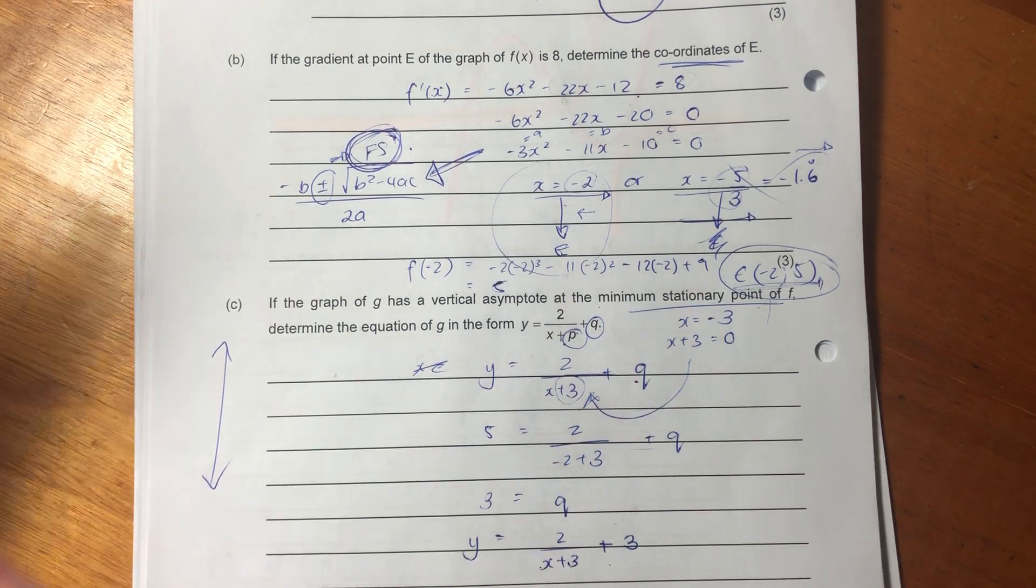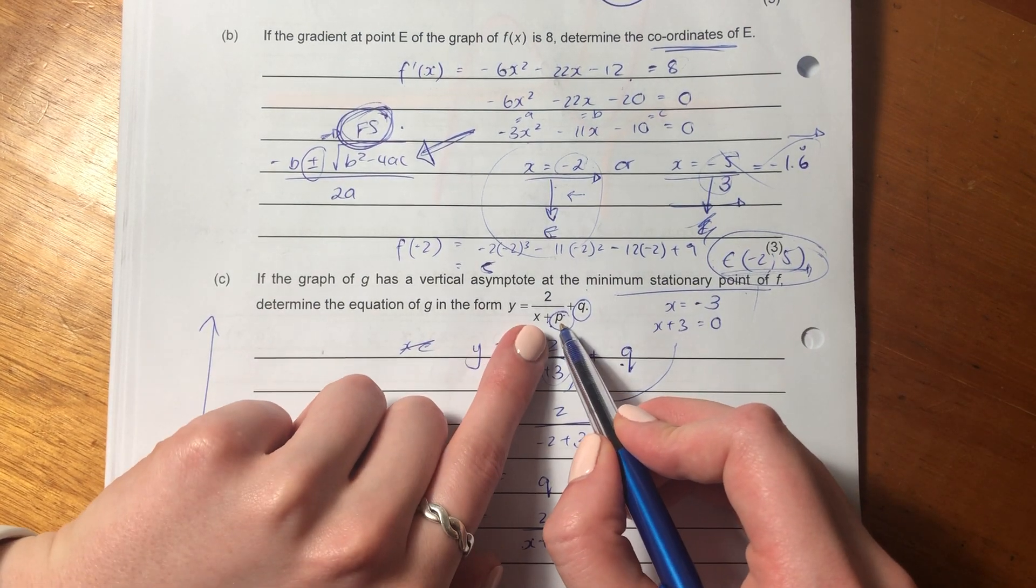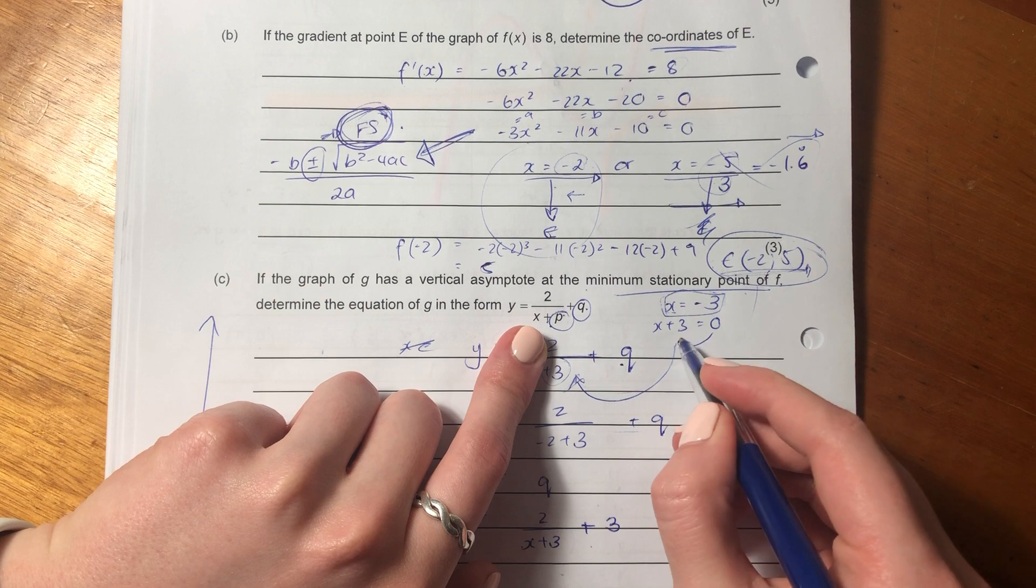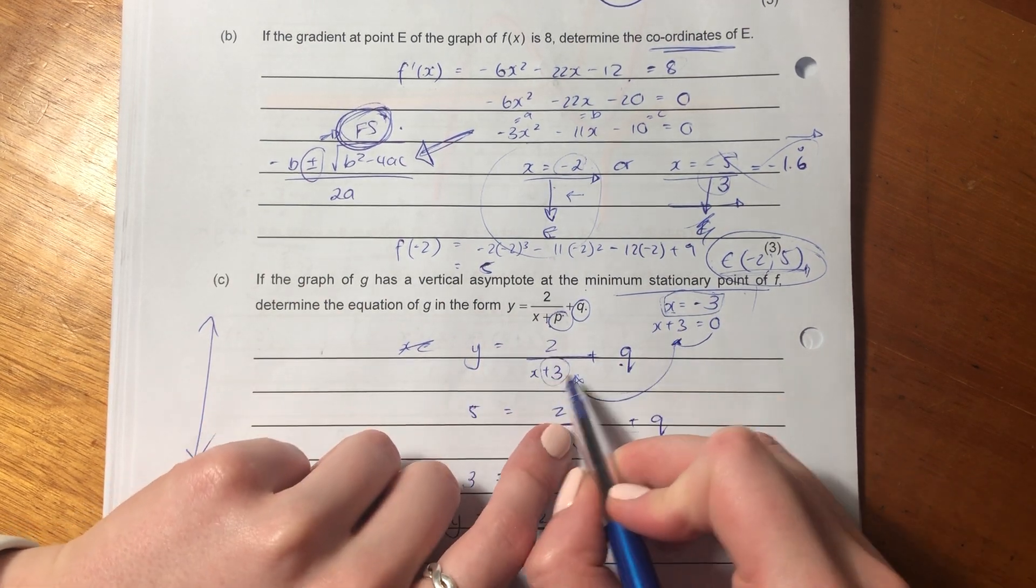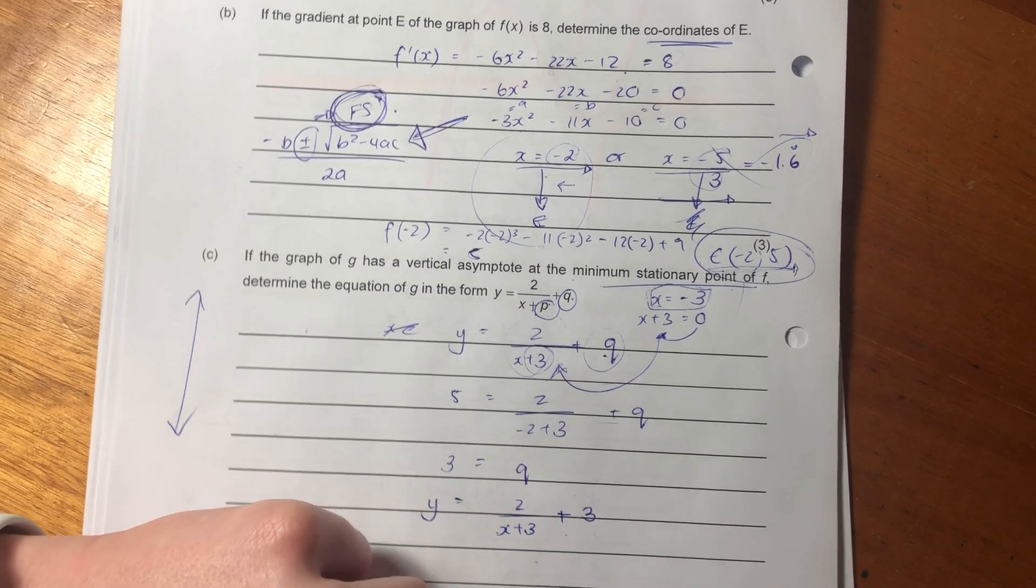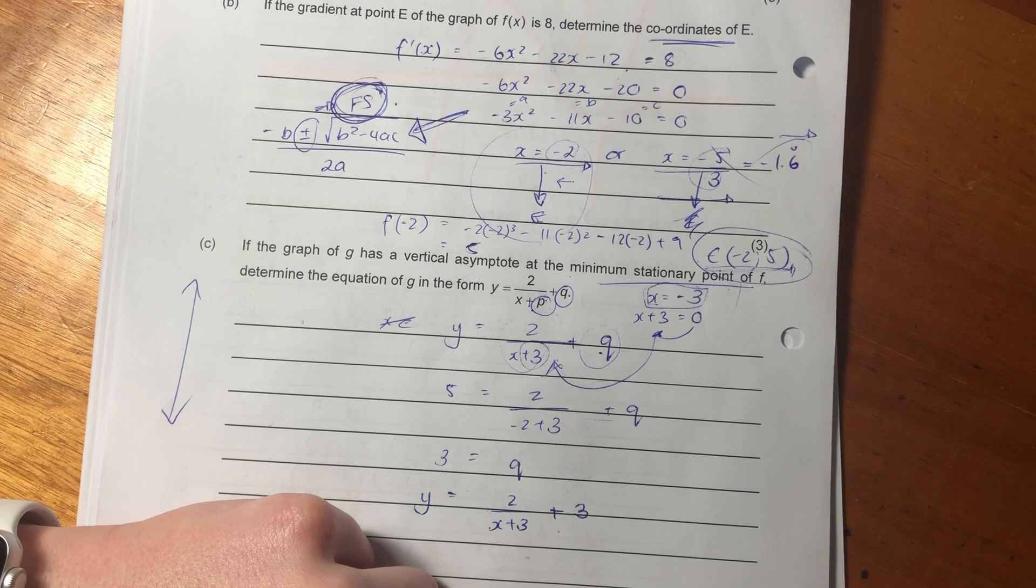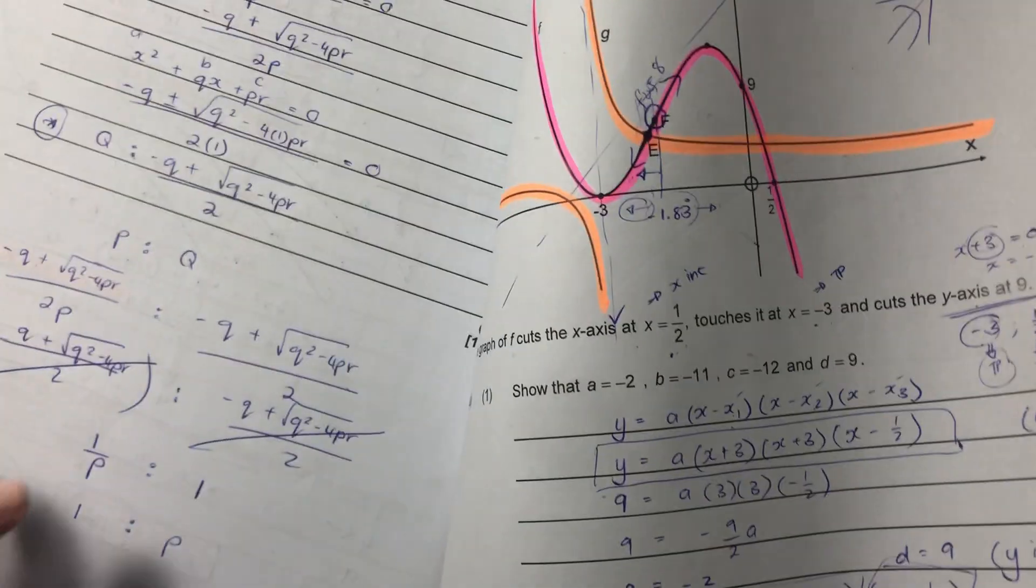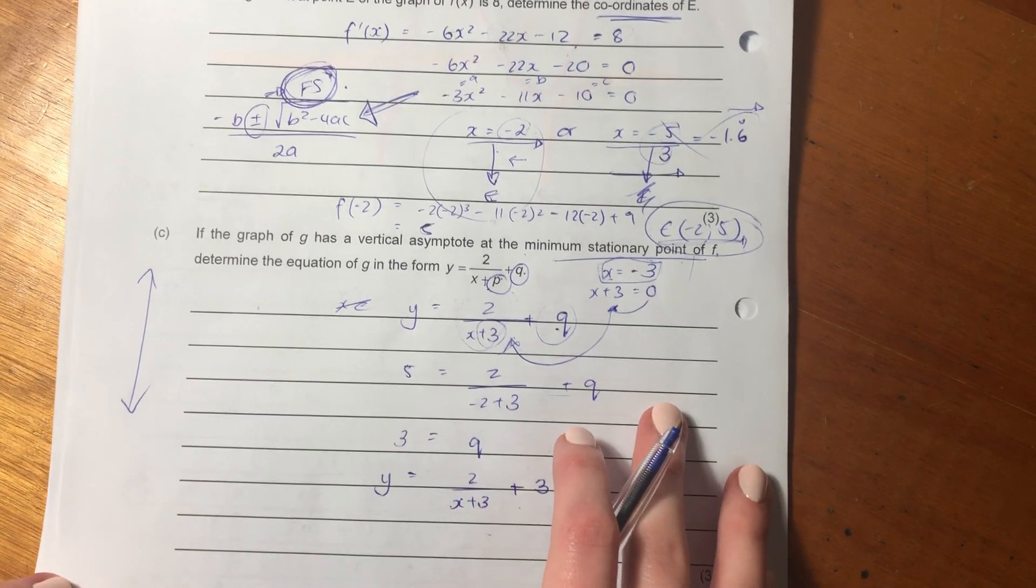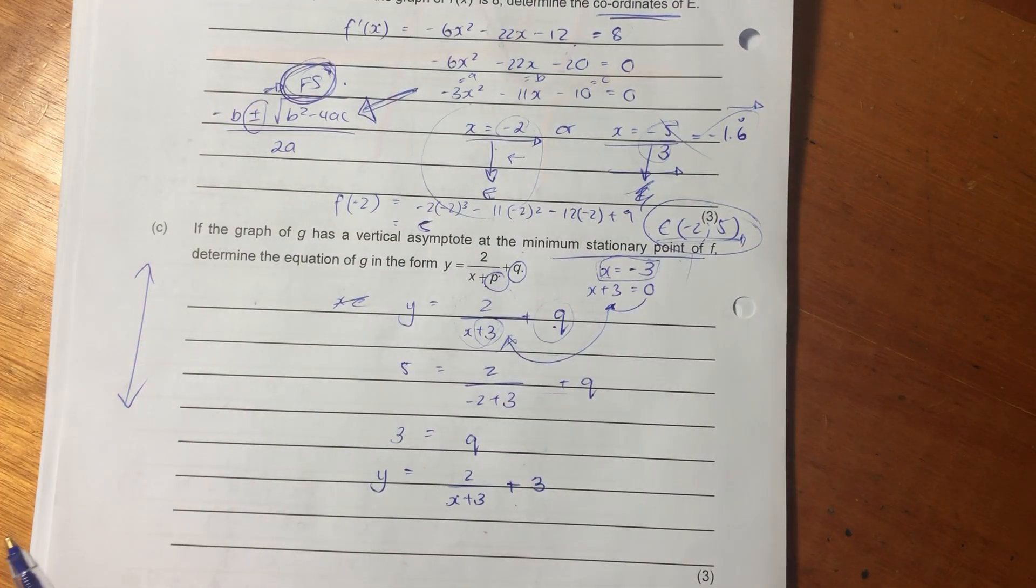It says determine the equation of G in the form y = 2/(x + P) + Q. So effectively all we need to do is find P and Q, but they've actually just given us P. Because they've said we know that P is actually the vertical asymptote. So if we know that the vertical asymptote is at x = -3, we just bring it over so that it's the right form, so it's x + 3, and we just throw it into the equation. So we have that, so all we need to do now is solve for Q. But what do we know, guys? We know that f(x) and g(x) intersect at point E. So if we sub point E into this, we can then get the value of Q. And this is why I always say this in my videos, it's important to do questions in order because they help you with the questions to follow.